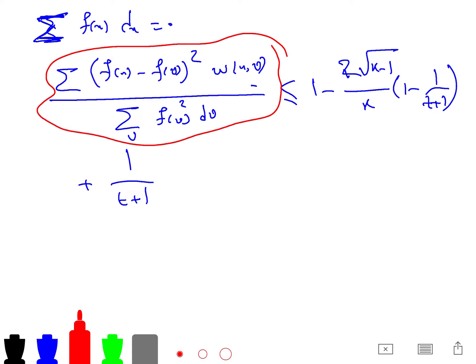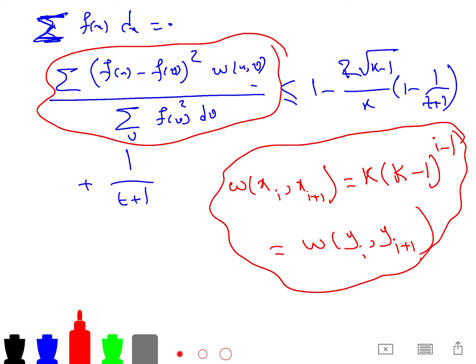So you will see that after some calculation, you will see that, oh, I should put w(x_i, x_{i+1}) equal to k(k-1)^{2i-1}. And of course, it should be equal to w(y_{i-1}, y_{i+1}). So if you put the design omega, your weights like this, then it is upper bounded by this guy, and the proof is complete.